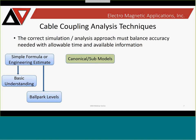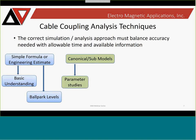A canonical or submodel is a simple representation of your vehicle or system. These are very good for performing parameter studies — for example, if you change the conductivity of a skin, you can evaluate how that might affect cable transients beneath that skin. It's also good for evaluating design features in a particular problem, such as how adding bond straps or lightning strips might impact coupling beneath a wing or radome area.